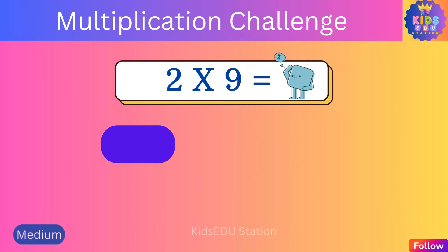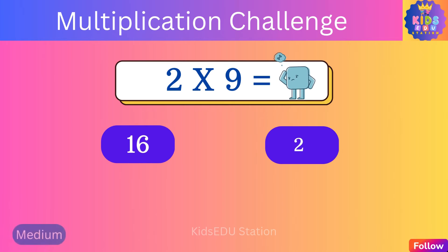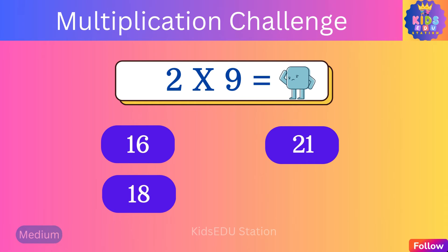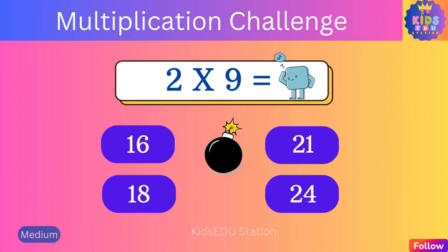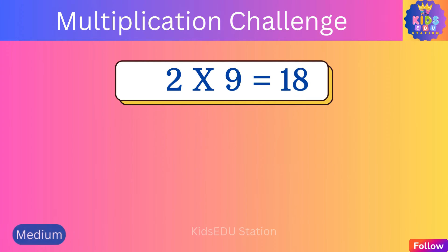What is two times nine? Sixteen, twenty-one, eighteen, twenty-four. Two times nine is eighteen.